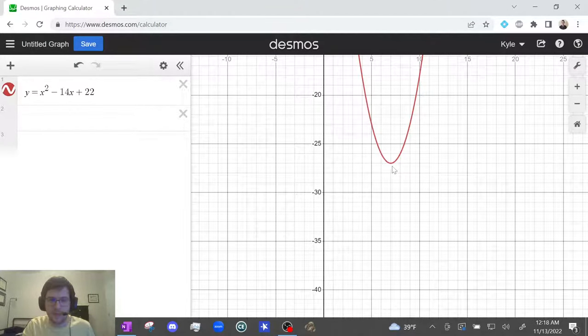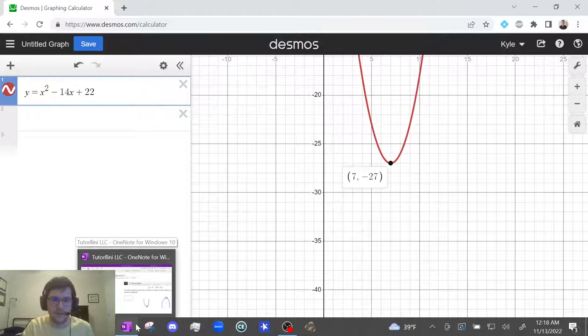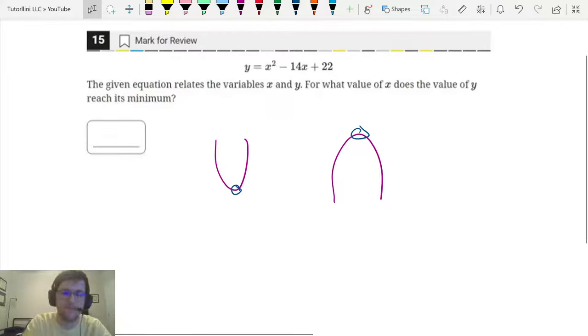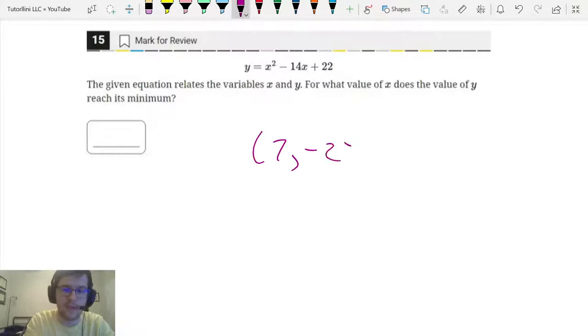And then this is where the minimum is at the very bottom, the vertex. So I just click on it and then I click on it again. And it tells me the vertex is seven comma negative 27. So let me go back to the question and write that down.